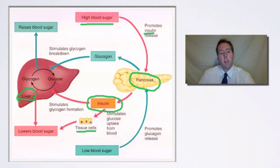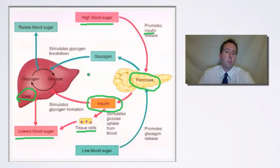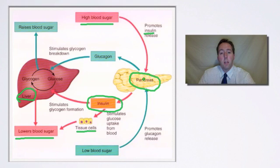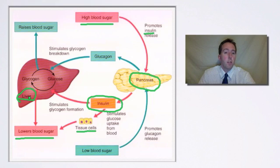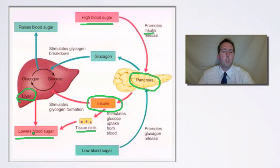The effectors do work to remove glucose from the blood, which lowers the blood sugar — that's the response. So the stimulus is high blood sugar, the receptor is the pancreas, the endocrine system controls the whole thing, insulin is released to the effectors — the cells and the liver — and that results in a response: the lowering of your blood sugar level. That's a stimulus-response model using the endocrine system, in this case using insulin.